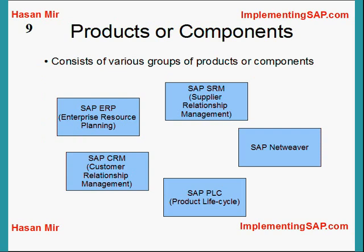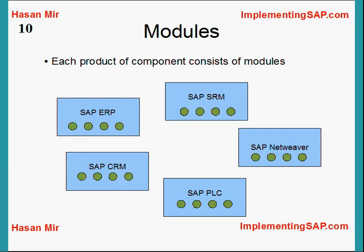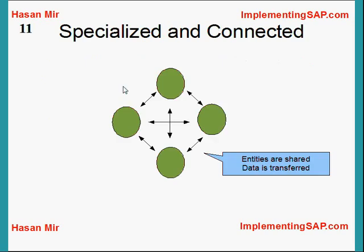SAP AG produces SAP business software called SAP ECC. You can divide SAP ECC into products and components. Major products and components include SAP ERP (Enterprise Resource Planning), SAP CRM (Customer Relationship Management), SAP SRM (Supplier Relationship Management), SAP NetWeaver — which is the technology stack running underneath the whole business application — and SAP PLM (Product Lifecycle Management). Each product or component can be divided further into modules. For example, SAP ERP has multiple modules — FICO is the most popular. When you configure SAP, you configure at the module level.